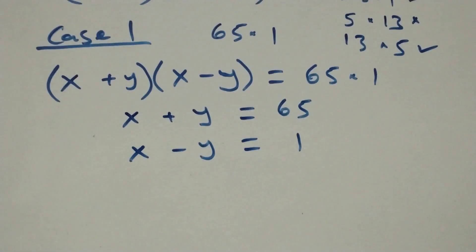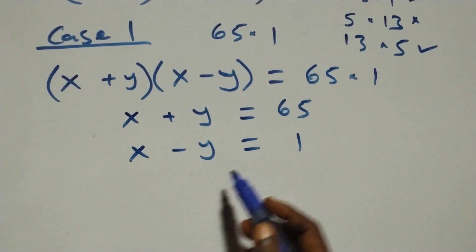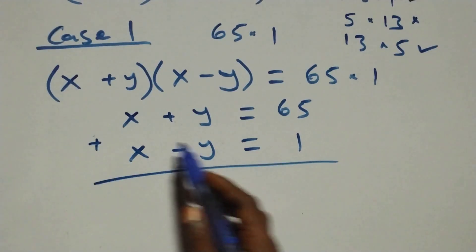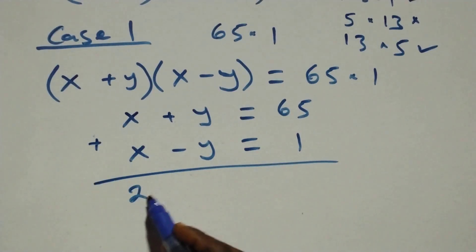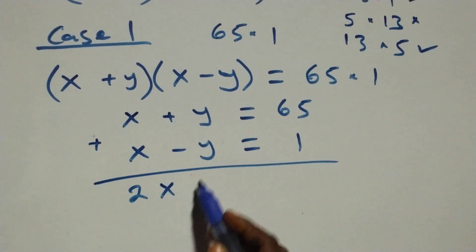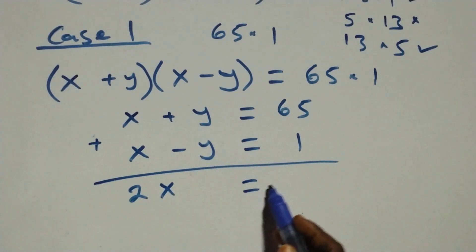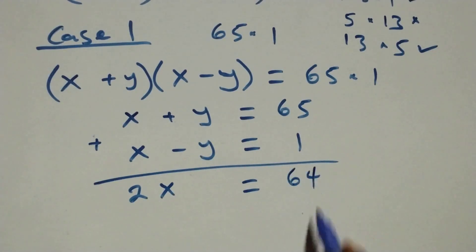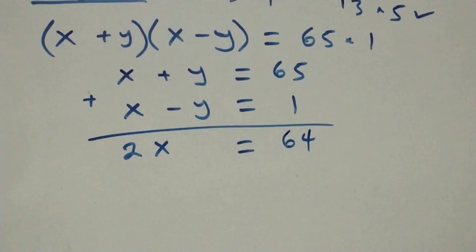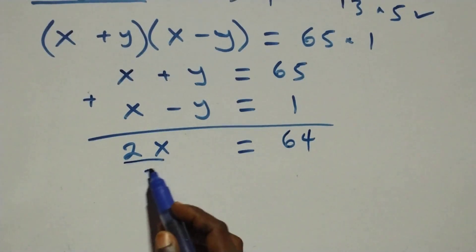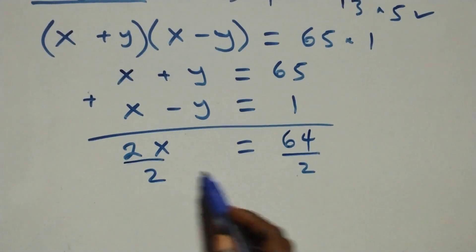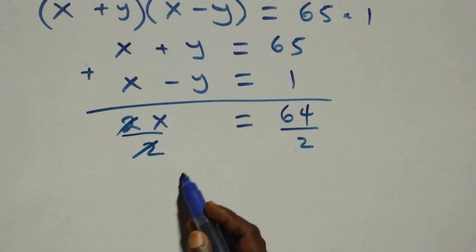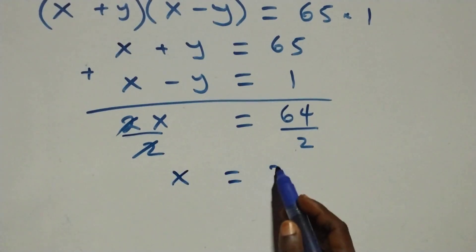When we solve these two equations simultaneously, we add them: x + x gives 2x, the y terms cancel out, equals 65 minus 1, that's 64. We divide both sides by 2, and we discover that x equals 32.